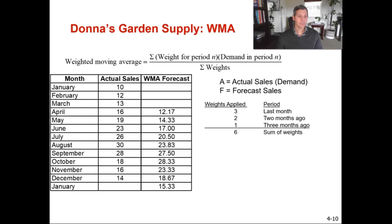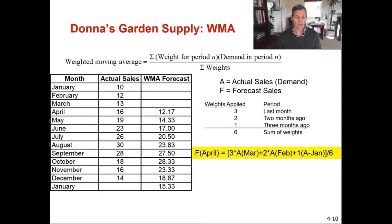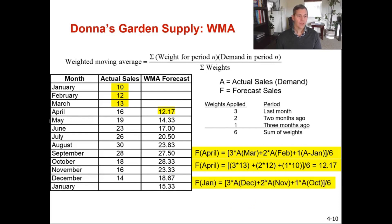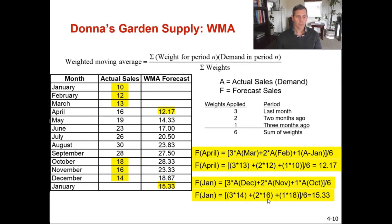For Donna, applying weights of 3, 2, and 1: to calculate April's weighted moving average, we take March (13) × 3, February (12) × 2, and January (10) × 1, add them up, and divide by 6, giving a weighted moving average forecast for April of 12.17. For January, we take December × 3, November × 2, and October × 1 — that's 14×3, 16×2, 18×1 — divide by 6, and get a weighted moving average of 15.33.